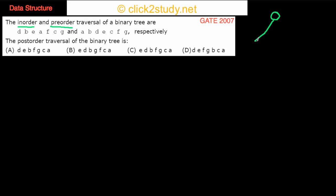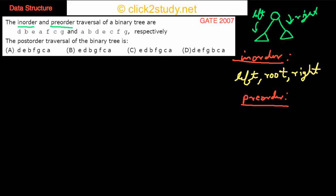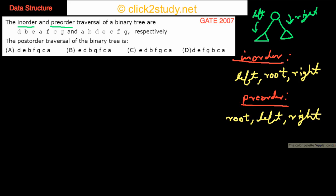So what do we mean by in-order and pre-order? Suppose this is some binary tree — this is the root, this is the left sub-child, and this is the right sub-child. In in-order traversal, you recurse on the left subtree, then write down the root, then recurse on the right side. In pre-order traversal, you write down the root first, then recurse on the left side, then recurse on the right side.